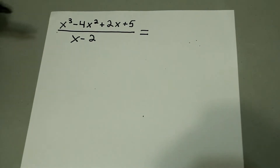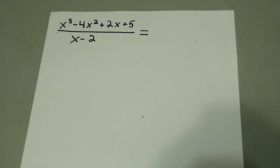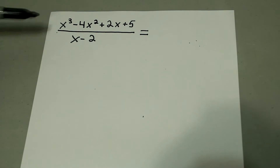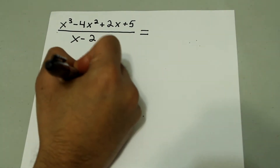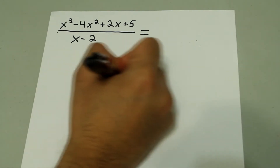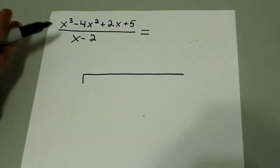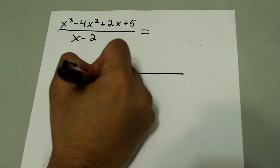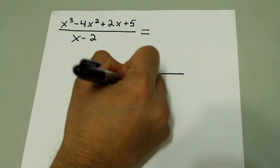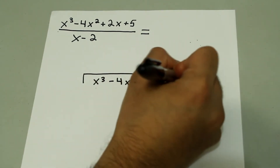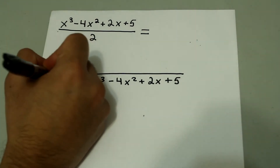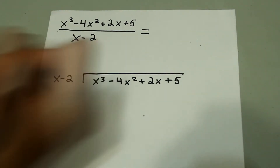We have x cubed minus 4x squared plus 2x plus 5 over x minus 2. In this case, you're dividing the numerator by the denominator. So you'd set it up just like you would any long division problem. The numerator goes on the inside — that's x cubed minus 4x squared plus 2x plus 5 — and the denominator goes on the outside: x minus 2.